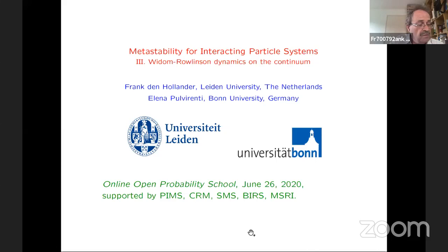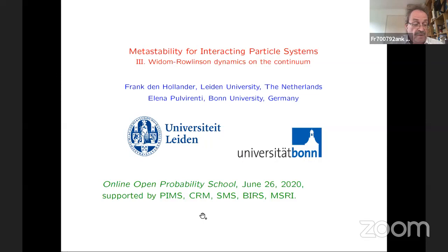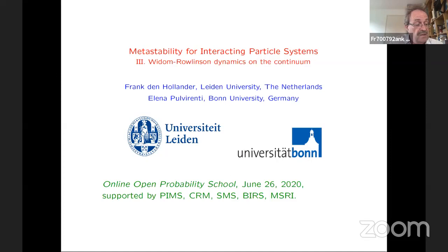The Widom-Rowlinson model is a model for interacting disks living in the plane. At the very end of the lecture I'll talk about possible generalizations. Once you go to the continuum, potential theory — which has been our main companion in these lectures — becomes difficult. When you have uncountable state spaces, there's nothing to count anymore. On the other hand, going to the continuum offers new opportunities: additional symmetries, just like Brownian motion has symmetries that simple random walk doesn't. Isoperimetric inequalities tend to be easier in the continuum than in the discrete.